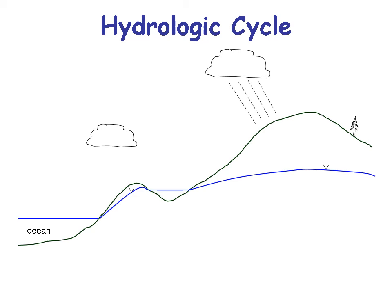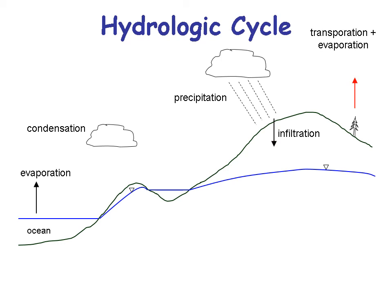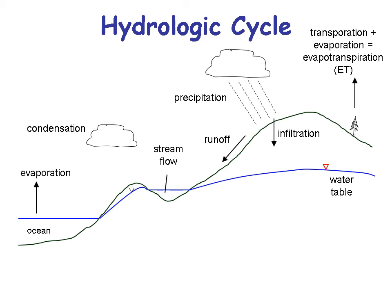Let's look at the hydrologic cycle. You get evaporation mostly from the ocean, which condenses into clouds, then precipitation from those clouds lands and infiltrates water into the ground. The blue represents our water table. You also get transpiration and evaporation — transpiration from trees, evaporation from the land — called evapotranspiration, or ET. Runoff occurs from water that does not infiltrate into the ground, and there's stream flow where you get both runoff and groundwater going into the ground.